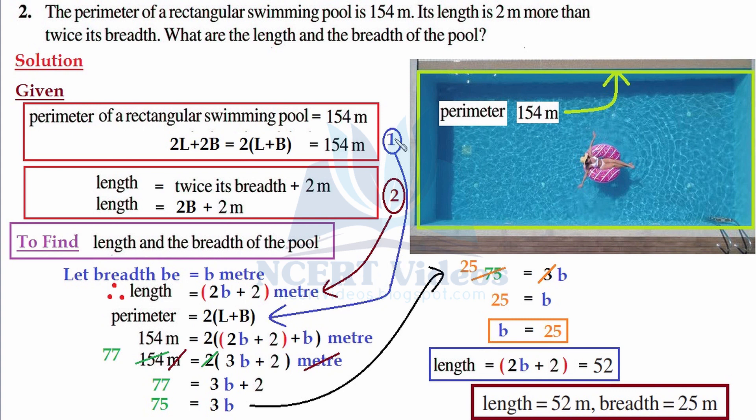Now what would be perimeter? It would be twice of length plus breadth. Again, nothing fancy. We just rewrote the first statement. But the perimeter is given to us: that is 154 meters. So we wrote 154 meters equals twice of length.